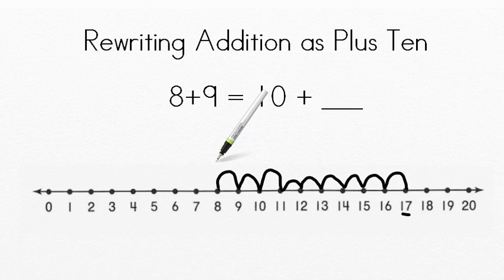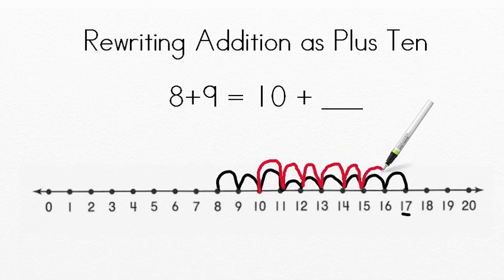Now that took a little bit of time to do that. But if we change that and instead added from 10, let's see how long it takes us to get from 10 to 17 to find that same answer. So let's start at 10. 1, 2, 3, 4, 5, 6, 7. So it took only 7 hops from 10.